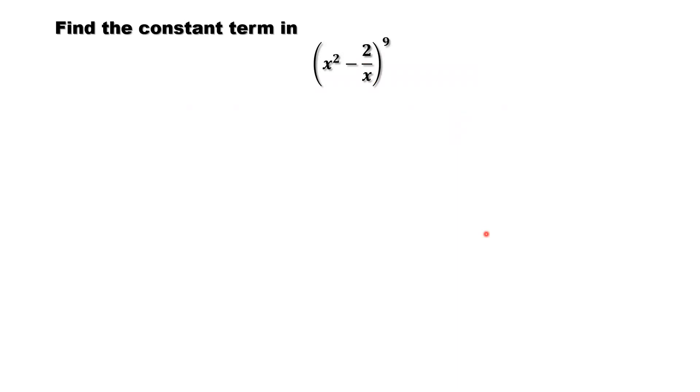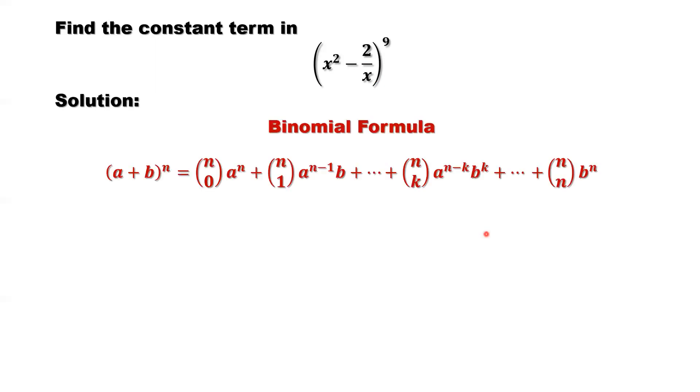First of all, let's review the binomial formula. This is the binomial formula: a plus b to the power n, and its expansion.